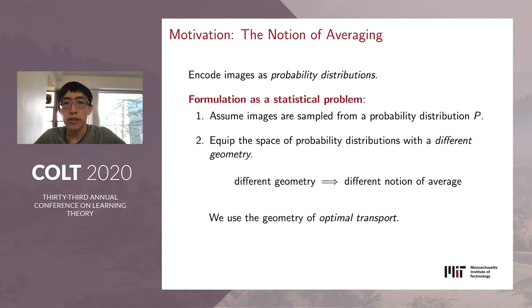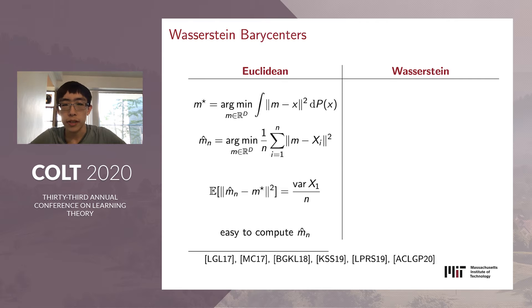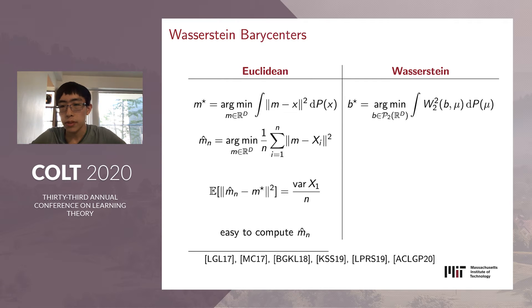When we think about generalizing the notion of average, we should start with the Euclidean case and draw analogies. In the Euclidean case, the population mean of a distribution p can be characterized as the point in R^d which minimizes the average squared distance to a point randomly drawn from p. This definition generalizes more easily to the setting of a metric space. In particular, we replace the Euclidean norm with the squared Wasserstein distance, and the minimizer of this quantity is known as the population Wasserstein barycenter—our notion of mean.